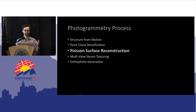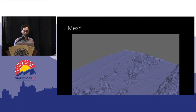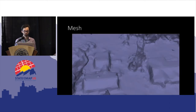The next step is to take those points and turn them into a surface that we can texture over. We use a Poisson triangulation method, available in the point cloud library. We create something that looks like this — the same area as before. You can see there's a surface now, although it's not textured. It has no color values — it's just faces.